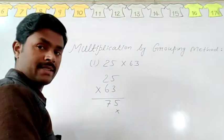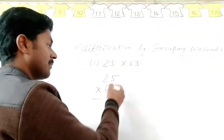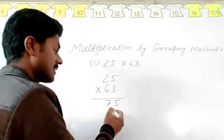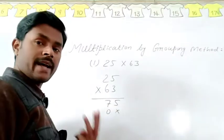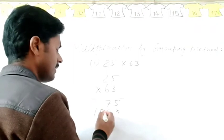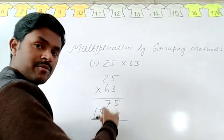Then after you have to multiply 6 and 5. 6 times 5 is 30, carry 3. 6 times 2 is 12 and 3 is 15.